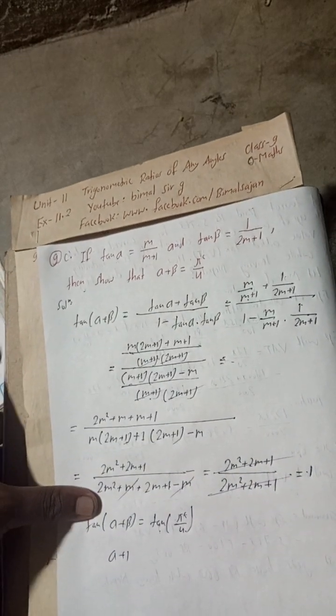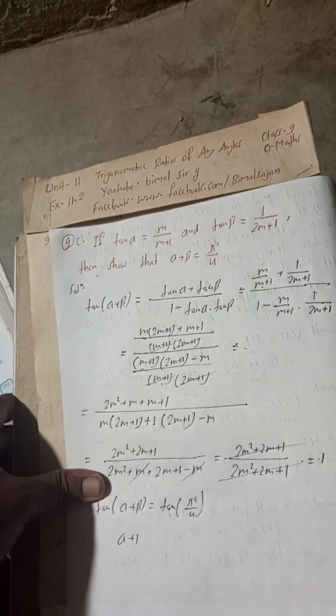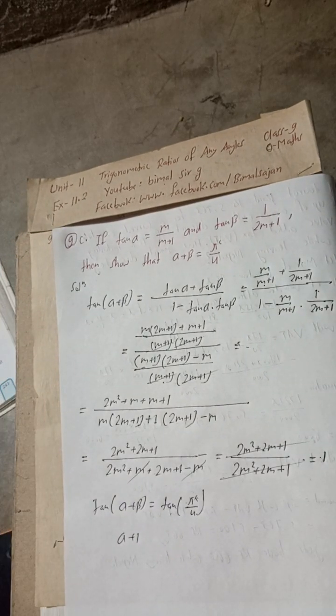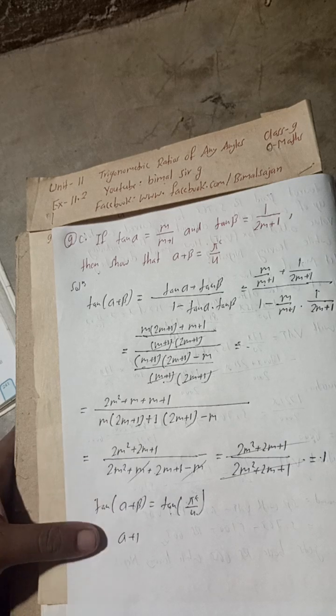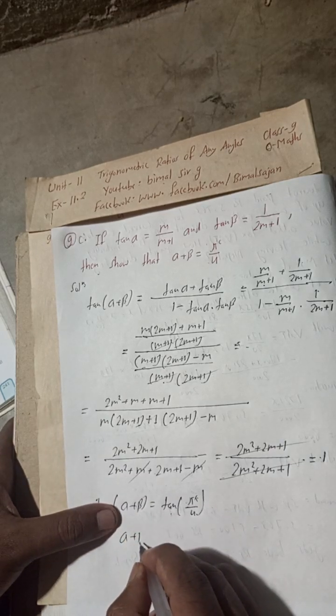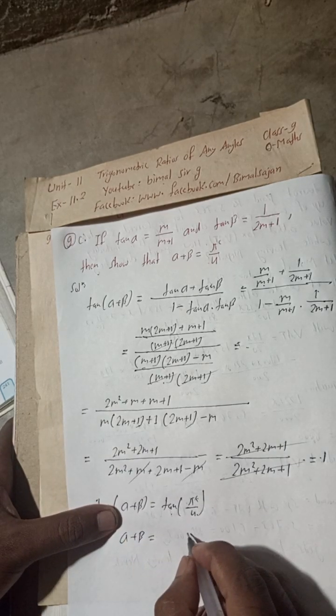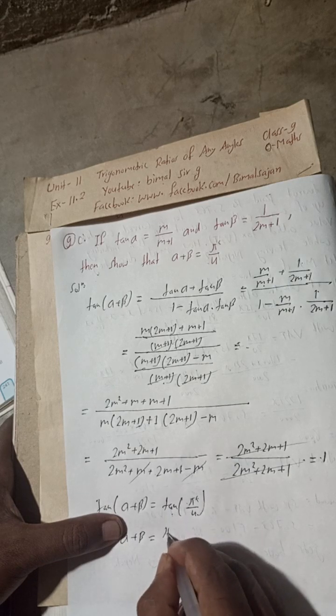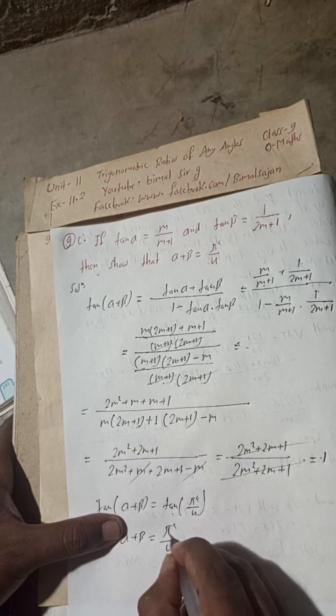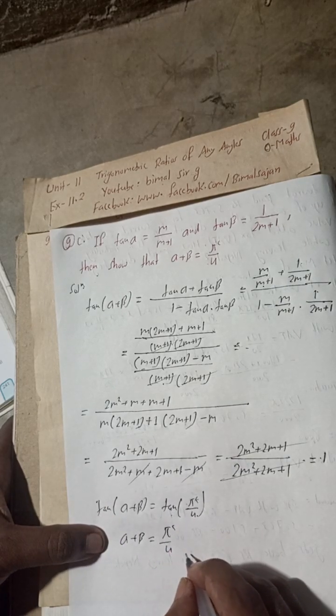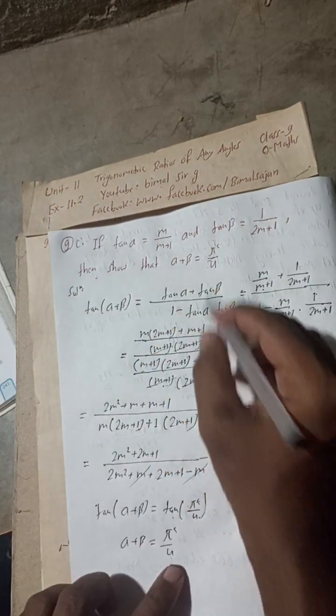That means tan will be cancelled and you can write α + β = π/4 radian. This is now proved. This is the complete solution of 9c.